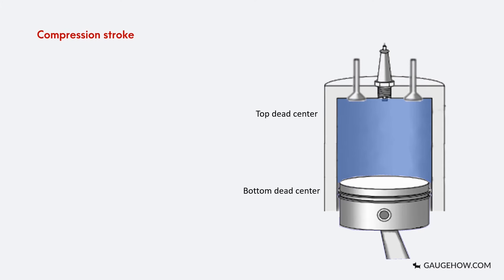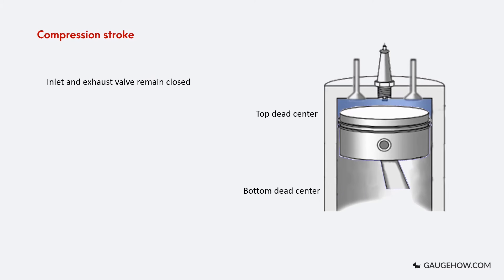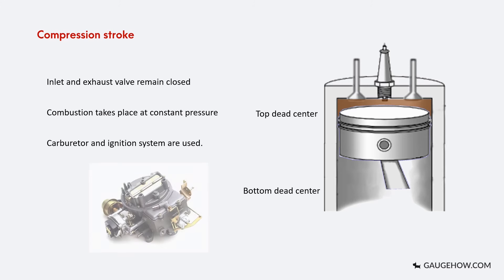During the compression stroke, the piston moves from bottom dead center to top dead center. The charge injected in the previous stroke is compressed by the return stroke of the piston. Both inlet and exhaust valves remain closed. At the end of the stroke, the charge is ignited using a spark plug and combustion takes place at constant pressure. We make use of the carburetor and ignition system. A carburetor is a mechanical component that mixes air and fuel for SI engines in the proper air-fuel ratio for combustion purposes.